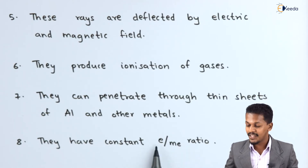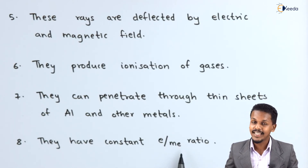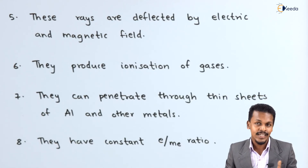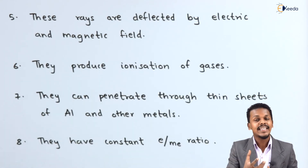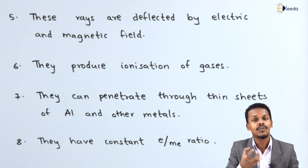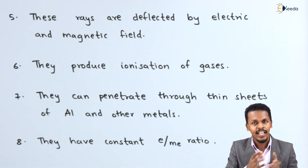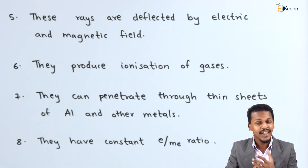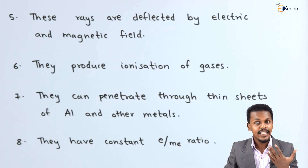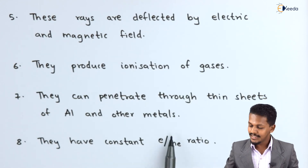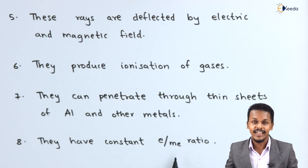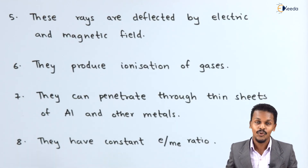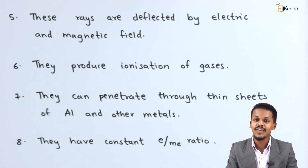Cathode rays have a constant e/m ratio — that is, the charge-to-mass ratio of the electron is constant. Since the electron has a specific mass and a specific charge, this ratio remains constant irrespective of the cathode material or the gas placed in the discharge tube.